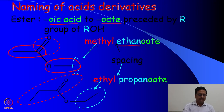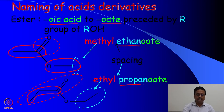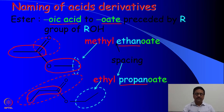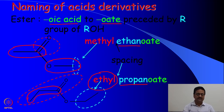Similarly, the next acid shown here has three carbon atoms, so it is originating from propanoic acid. When it is an ester, the name becomes propanoate, and this signifies the ester part which has come from ethyl alcohol. So we write it as ethyl propanoate.